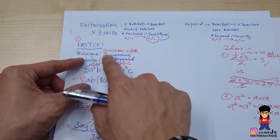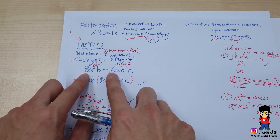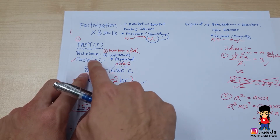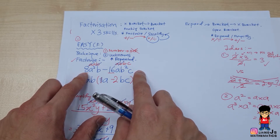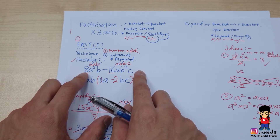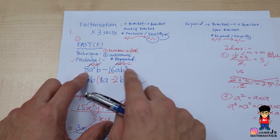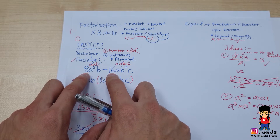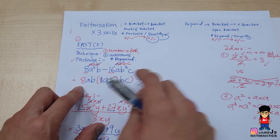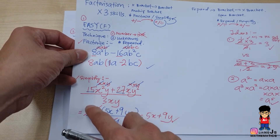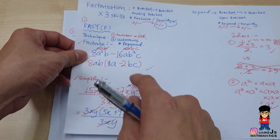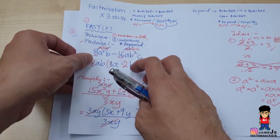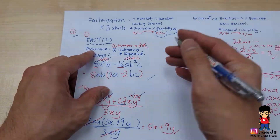For easy factorization, you check the numbers and see whether they can all be divided by a certain number. If there are 3 terms, all 3 must be divisible by the same number. When there are multiple options — like 8 and 60 can divide by 2 or 4 — we always use the biggest. Also check that unknown letters repeat across all terms and take them out.